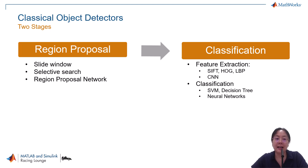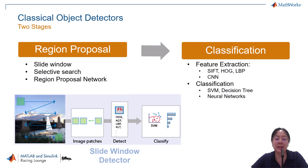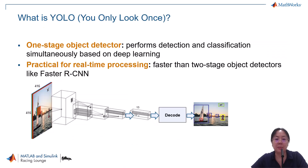Here's a diagram showing how a sliding window detector works. In this demo, we are using a YOLOX model. YOLO stands for You Only Look Once, and it's a one-stage detector. Unlike two-stage models like Faster R-CNN, YOLO can detect and classify objects in a single pass, which makes it much faster and thus suitable for real-time applications.